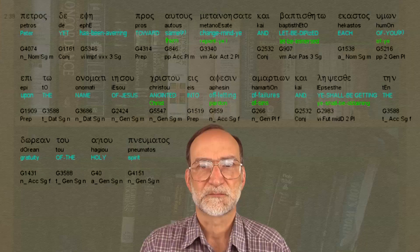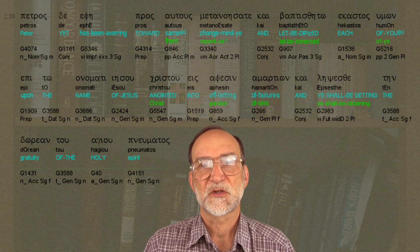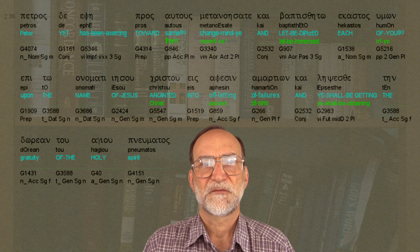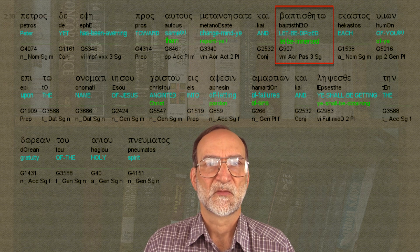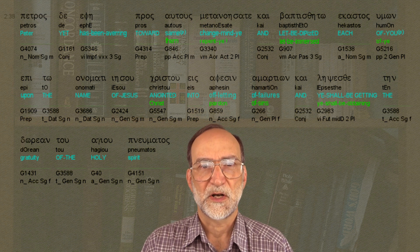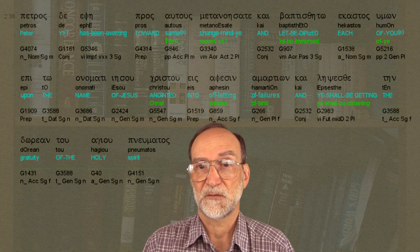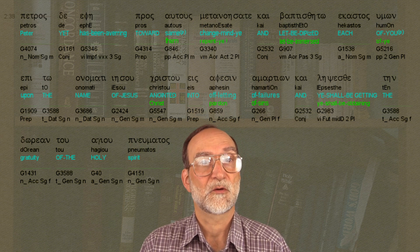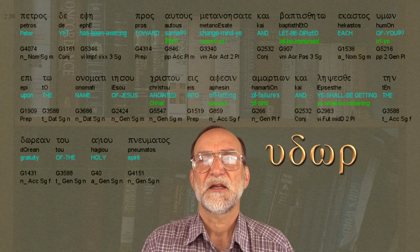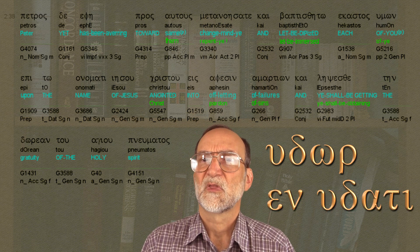Let's look at that more closely. Peter commands his audience to 'repent,' which is really the word 'metanoesate,' which means 'change your minds,' immediately followed by telling them to be immersed. Now that we have established that it is the general word 'immerse,' you need to find out what they are to be immersed into. Notice that water is not mentioned anywhere here. There is a Greek word for water — it is 'udor' in the Greek. If you wanted to say 'in water' in the dative case, you would spell it out 'en udati,' but you will not find it there.